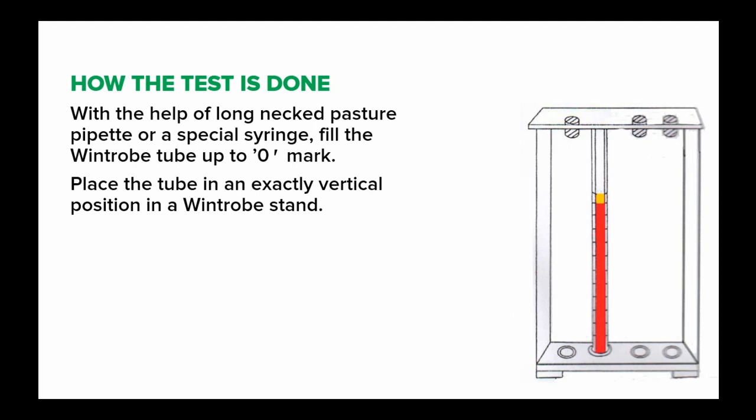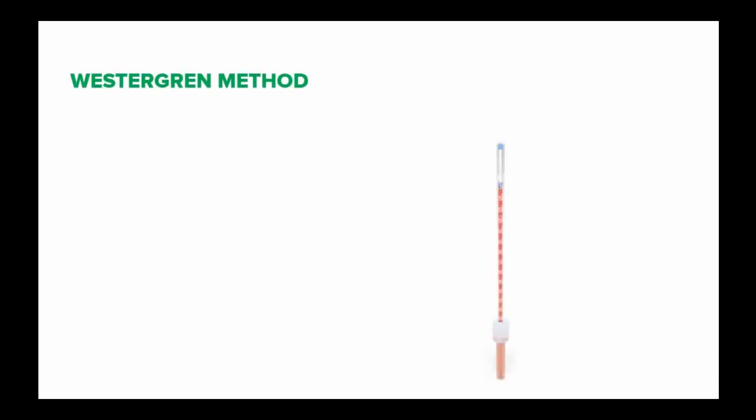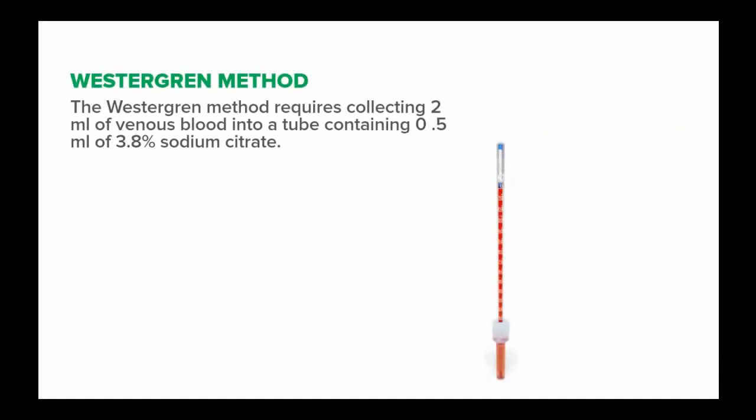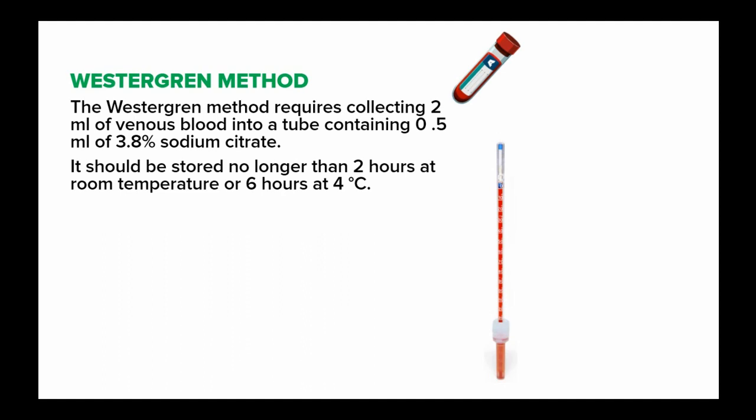At the end of an hour, read the upper level of the red blood cell column value. In the Westergren method, you require collecting 2 ml of venous blood into a tube containing 0.5 ml of 3.8% sodium citrate anticoagulant. The specimen should be stored no longer than 2 hours at room temperature, or no longer than 6 hours at 4 degrees Celsius.